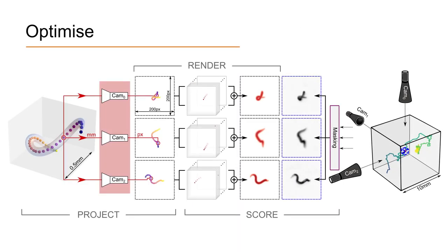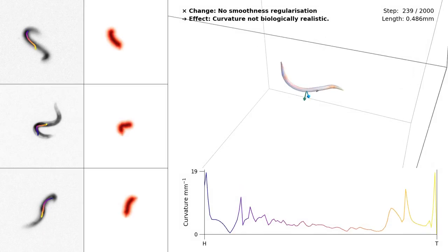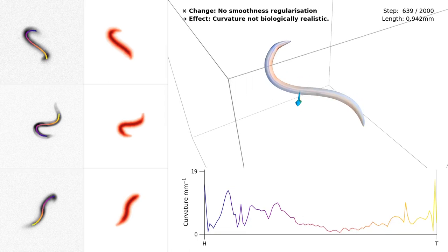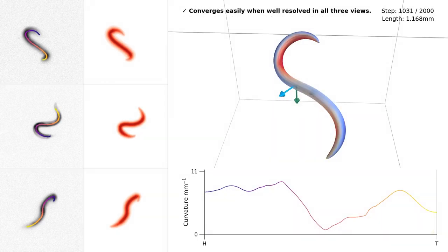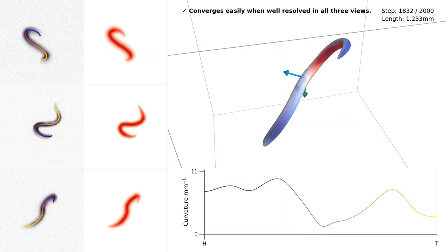The rendered images are compared directly against the input images to generate the main pixel-wise loss. We include a smoothness regularization term to ensure that the curve stays biologically realistic, and a temporal loss to make sure that the parameters change smoothly between frames as we optimize along a sequence.